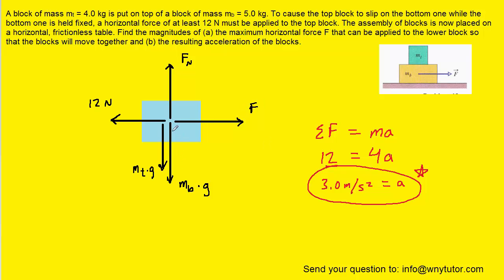So on the bottom block, we have the gravitational force acting directly on the bottom block. We also have the weight of the top block pressing down on the bottom block. There's a normal force pressing up. But what's really important is to notice this force right here, this 12 Newtons.